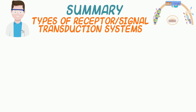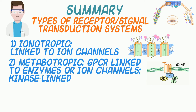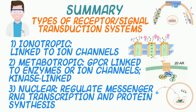In summary, the receptor signal transduction systems can be characterized as follows. First, ionotropic receptors — for example, the GABA receptor linked to a chloride channel or the nicotinic acetylcholine receptor associated with sodium channels. Second, metabotropic receptors like G protein-coupled receptors linked to a G protein that can regulate enzymes like adenylate or guanylate cyclase or even ion channels, and those like the insulin receptor linked to kinase enzymes that can regulate cascades of phosphorylation and dephosphorylation. Finally, nuclear receptors like lipophilic hormone receptors for thyroid hormones and steroid hormones, which regulate messenger RNA transcription rates leading to increases or decreases in protein synthesis.